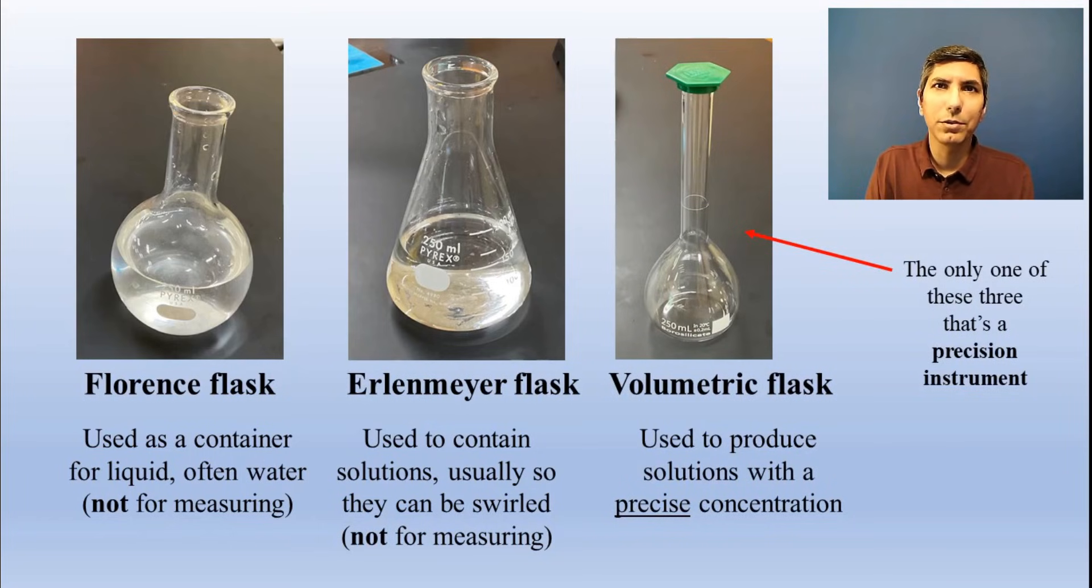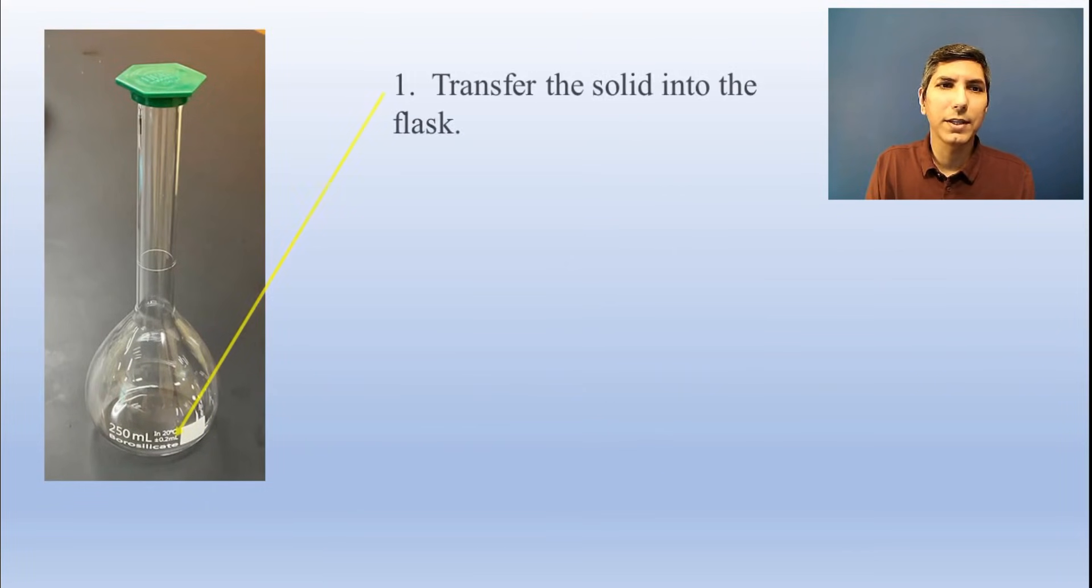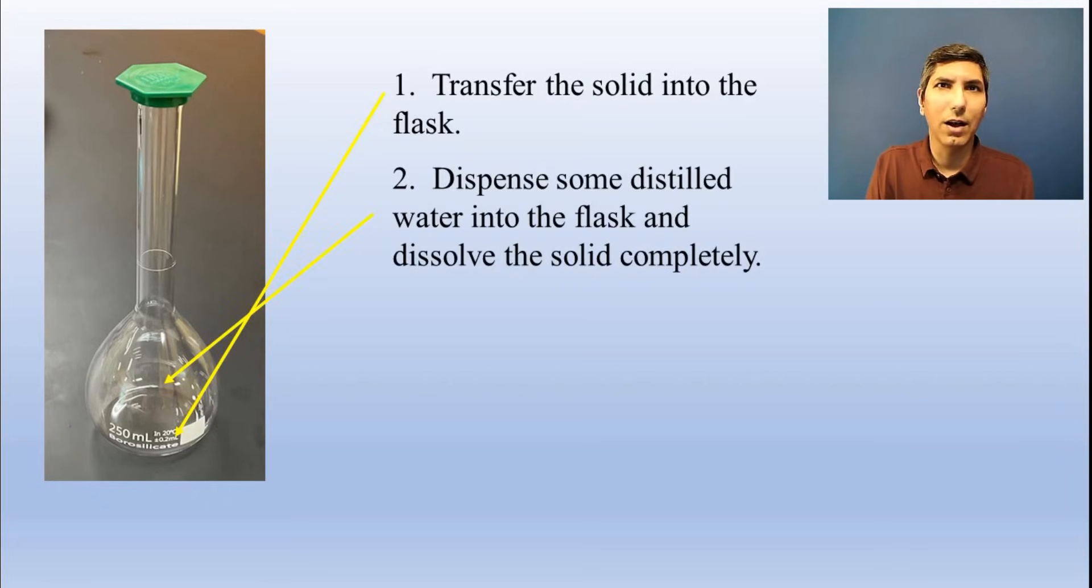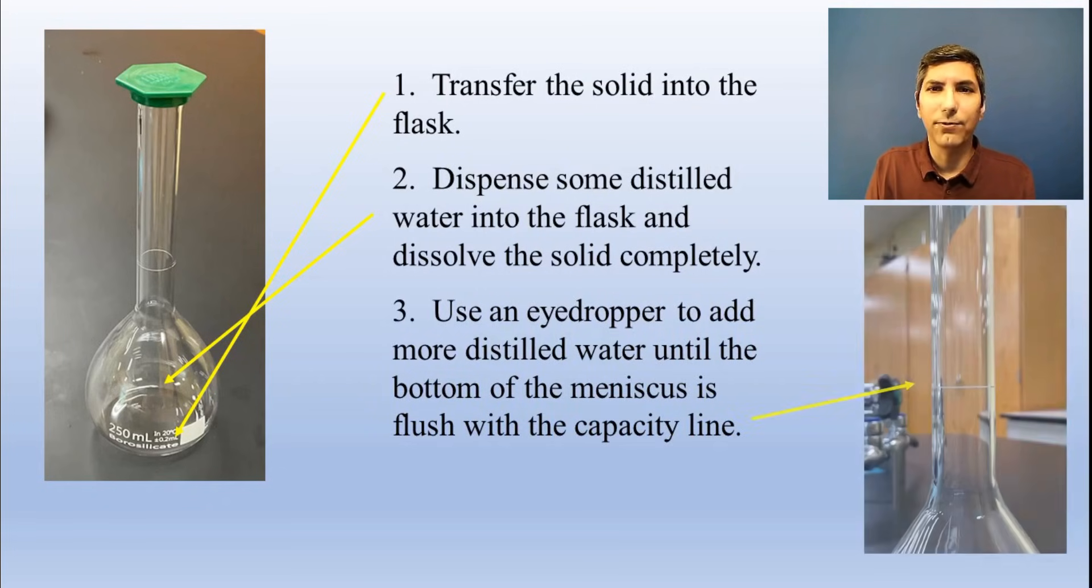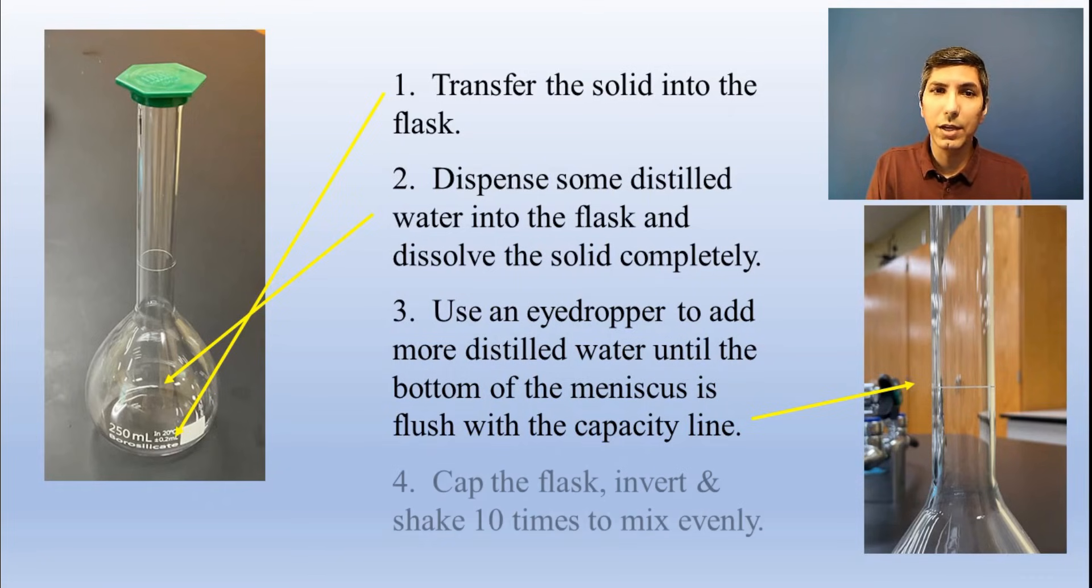Volumetric flasks are used to produce solutions with a very precise concentration. Now, to make a solution using one of these, very carefully transfer the desired amount of solid into the flask. Then add some water to get the solid to dissolve. Once the solid is dissolved, you add more water until the bottom of the meniscus is flush with the line on the volumetric flask. That line represents the flask's capacity. It might be 100 milliliters, maybe 500. That's the volume we're working with. Then, to distribute the solution evenly, we put a cap on the flask, then invert the flask, and shake it 10 times.